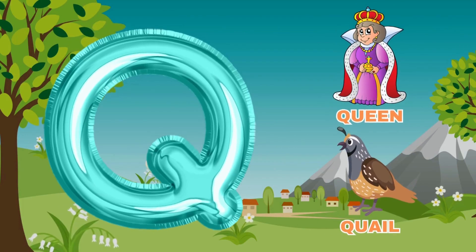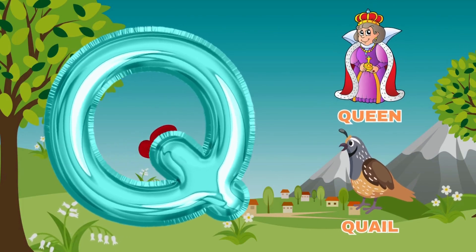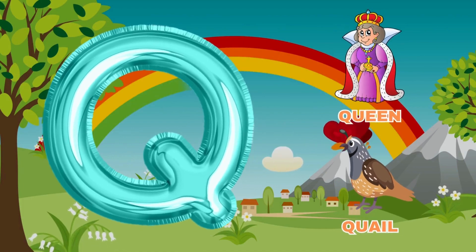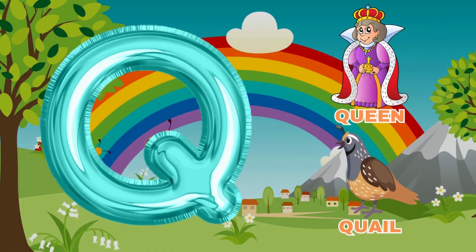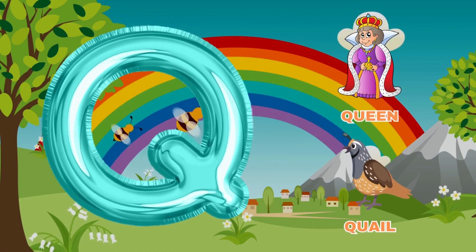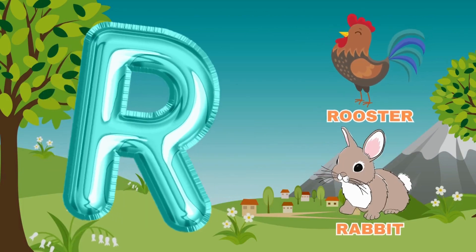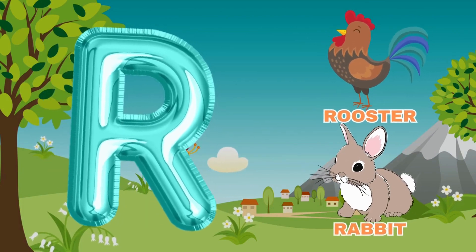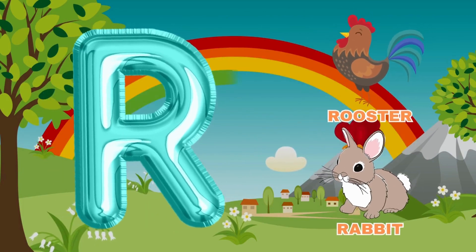Q, Q for queen, Q for quail. R, R for rooster, R for rabbit.